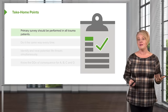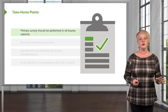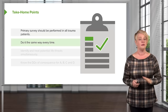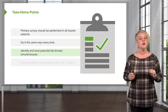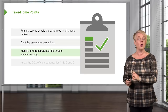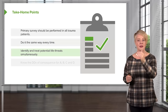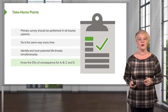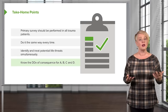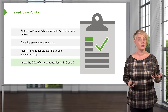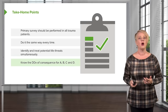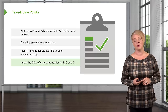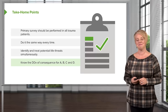Take-home points from this lecture: you must do a primary survey in all of your trauma patients, and do it the same way every single time so you don't miss things — be super systematic. Look for specific life threats in the A, B, C, and D domains and treat them as you identify them. Know the differential of consequence for A, B, C, and D so you know what you're looking for. If you follow these steps, you're going to have a successful trauma resuscitation for all of your patients.